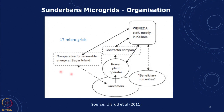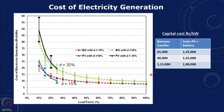In the Sundarbans model, there is a cooperative for renewable energy in Sagar Island with 17 microgrids, involving the West Bengal Renewable Energy Development Agency, a power plant operator, customers, and a committee of beneficiaries. When load factors are low, costs are high; for isolated microgrids linked only to residential load, load factors will be low.